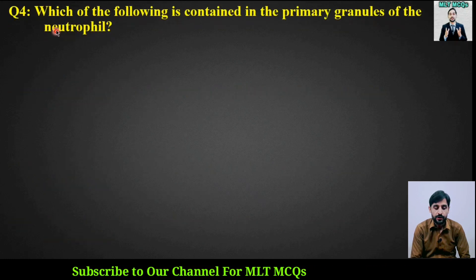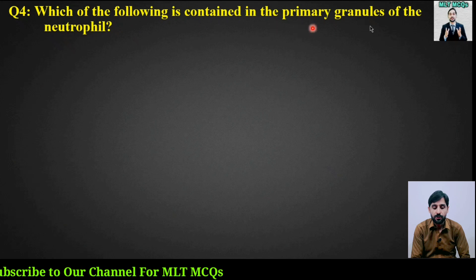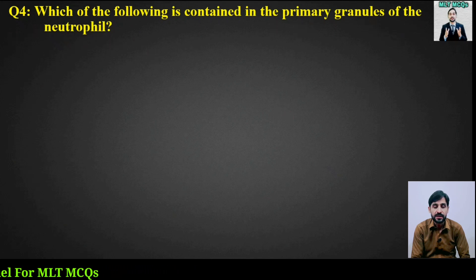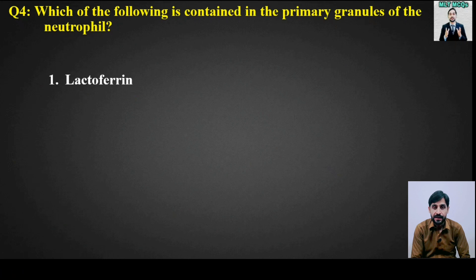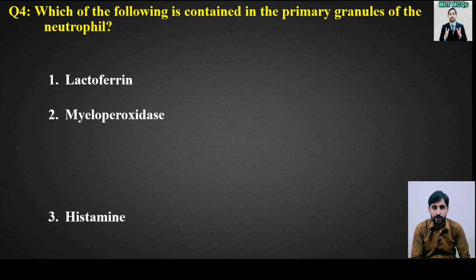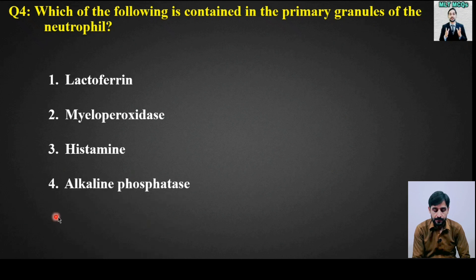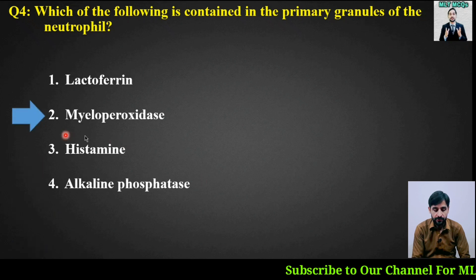MCQ number 4: Which of the following is contained in the primary granules of the neutrophil? Options are: lactoferrin, myeloperoxidase, histamine, or alkaline phosphatase. The right answer is option number 2, myeloperoxidase.